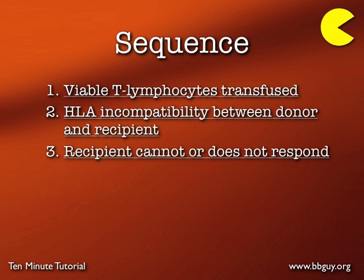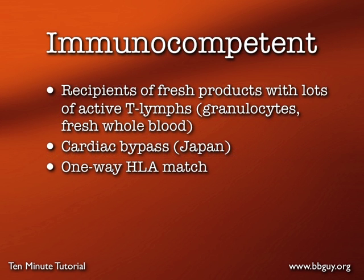The sequence involves the transfusion of viable T-lymphocytes, HLA incompatibility between donor and recipient, and a recipient who either can't or doesn't respond. The 'doesn't respond' case is important because this can happen in immunocompetent people as well. I'm going to focus on the one-way HLA match rather than the less common fresh product and cardiac bypass scenarios.